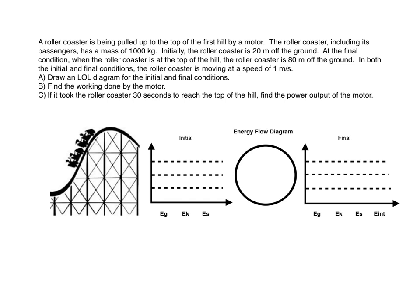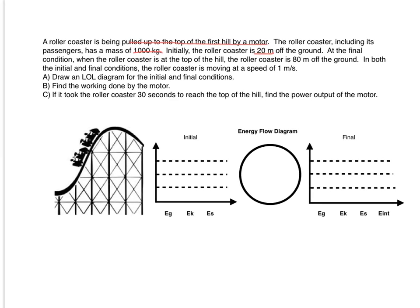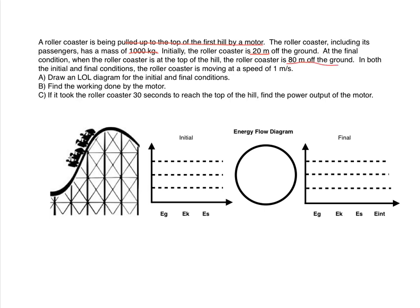Okay, so let's just go over that and figure out what's probably important. So first off, we know the roller coaster is being pulled up to the top of the first hill by a motor. We've also got a mass for the roller coaster of 1,000 kilograms, that the roller coaster is initially 20 meters off the ground, and in the final case, 80 meters off the ground. In both the initial and final conditions, the roller coaster is moving at a speed of 1 meter per second.